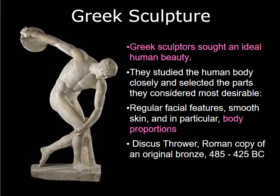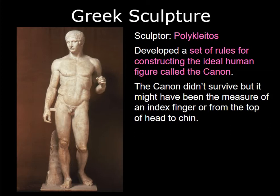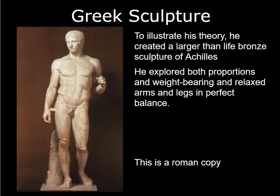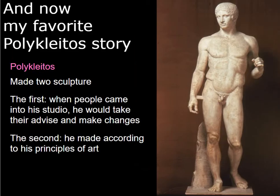Greek sculptures — they were trying to reach an ideal of beauty and proportion. Look at this disc thrower. It's actually a Roman copy, but it shows what the Greeks were doing. There was one Greek sculptor named Polykleitos. He made this artwork, Achilles. He was trying to get everything right, and he even developed a set of rules he called the canon. Using these rules, he could come up with the ideal proportions. We don't know exactly what the canon was, but maybe it was something like three fingers is the same length as your chin. Compare the difference between Egyptian art and Greek art — the Egyptian art looks stiff, like he's sitting there like a rock, but the Greek art shows weight shifted on one foot, all cool.